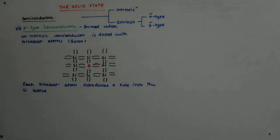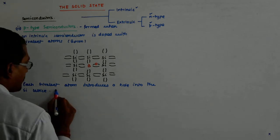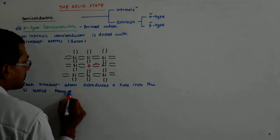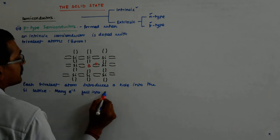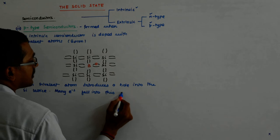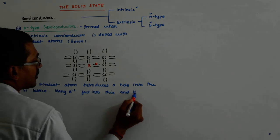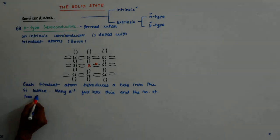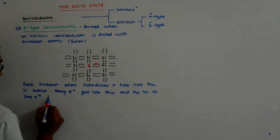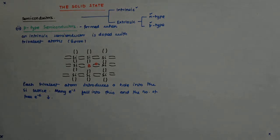Each trivalent atom introduces a hole into the silicon lattice. Many electrons fall into this.